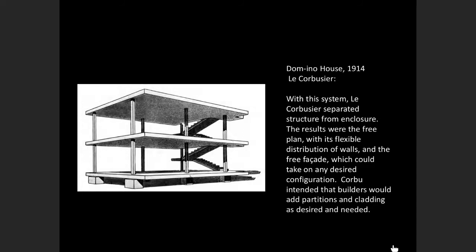His first notable project wasn't even a real project — it was a kind of idealized house. If somebody asked him to design a house with industrial ideas, what would it be? He came up with what he called the Domino house from 1914. The idea was to strip down a house to its basic essentials: floors, columns, roofs, foundation. The rest almost didn't matter — you could apply the facade and organize the rooms inside whatever way you needed for that individual family. At its core, a house was this essential basic structure.